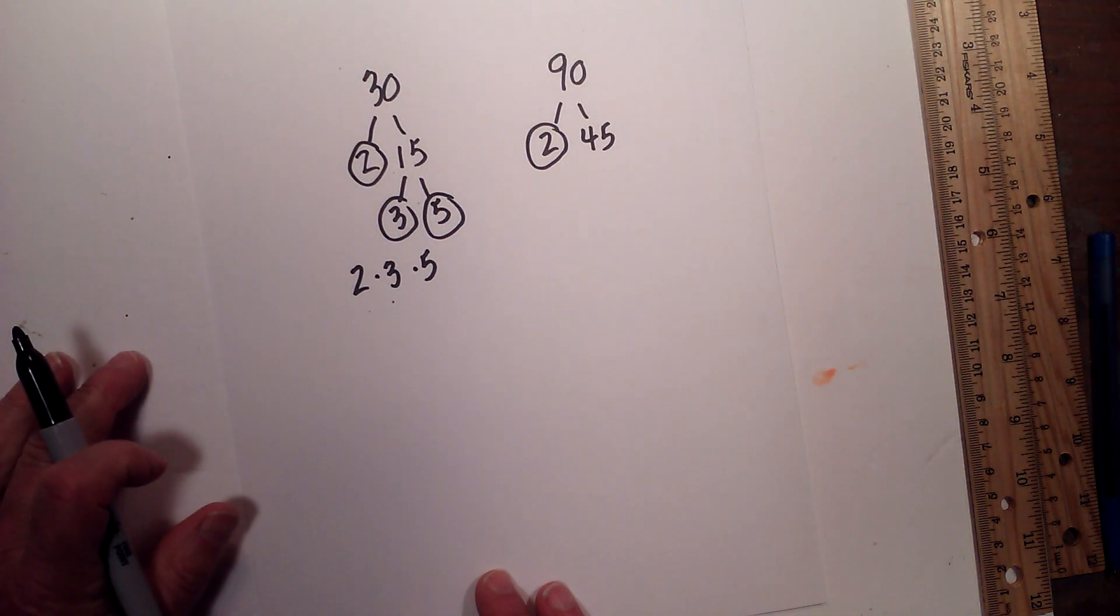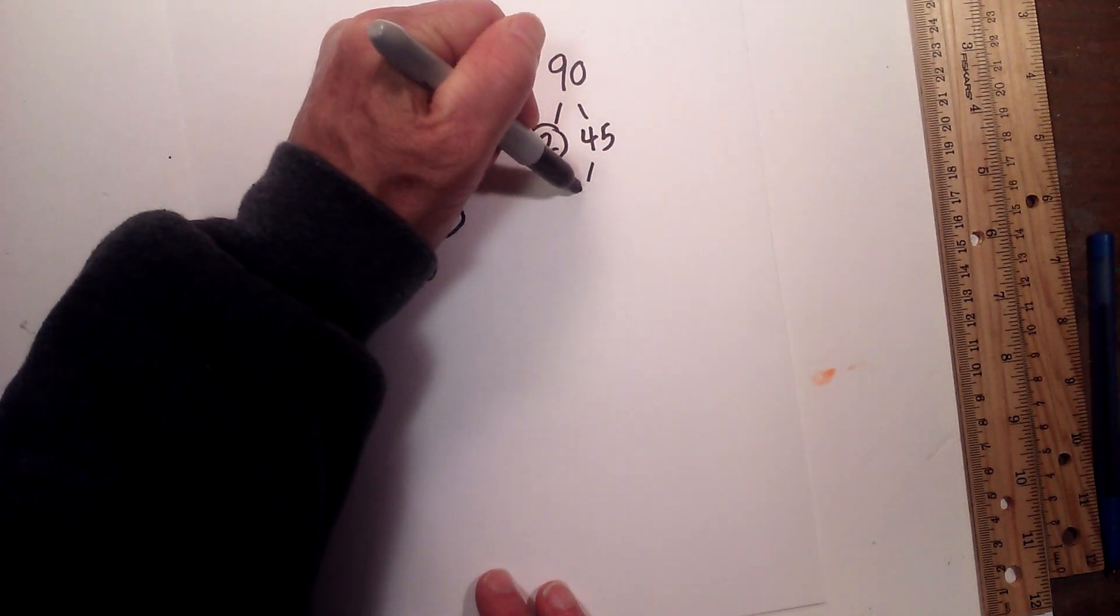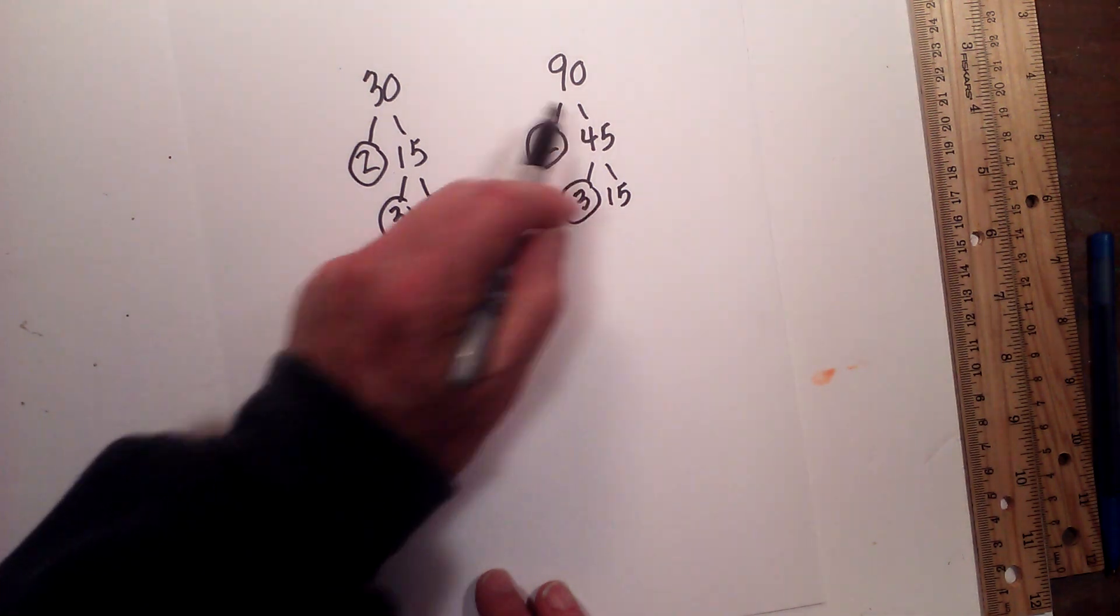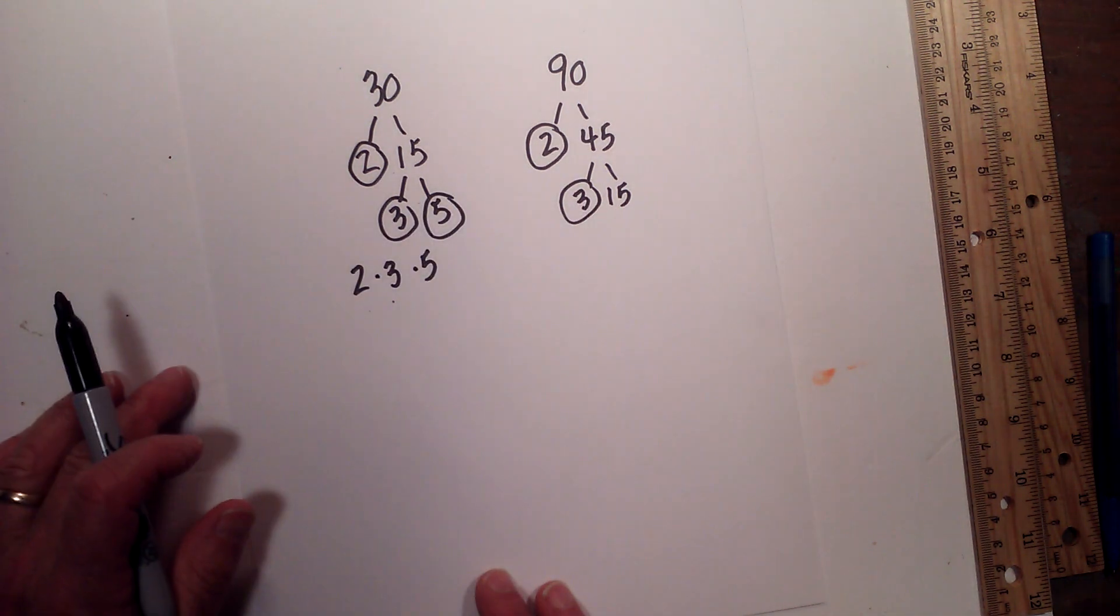Circle the 2 because it is prime. Now let's try 3 times 15 because 3 times 15 is 45. Circle the 3 because it is prime.